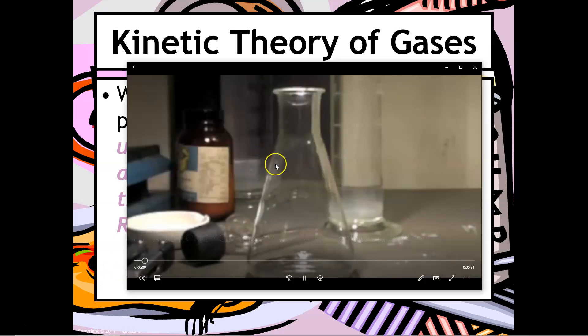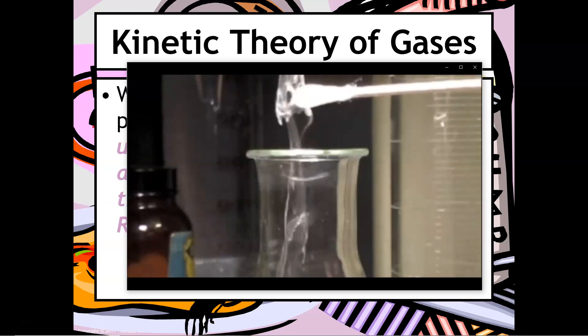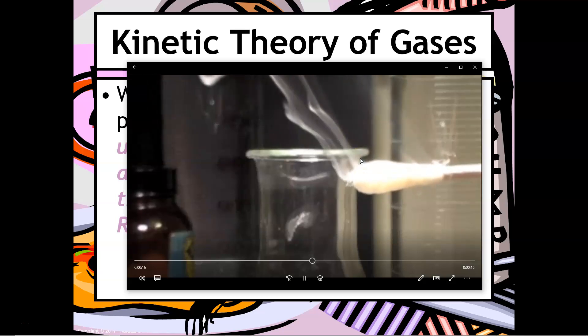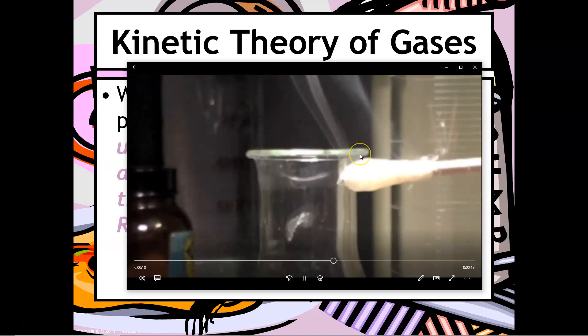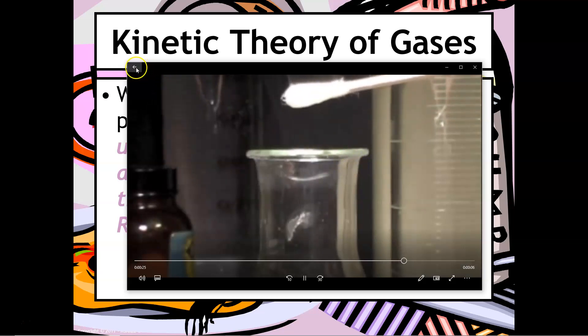Here is a quick video clip of hydrochloric acid forming ammonium chloride. You can see the HCl in the flask combining with the ammonia on the tip of a Q-tip, and the white solid that forms is ammonium chloride. This gives evidence that gas particles are moving in a random walk type motion.